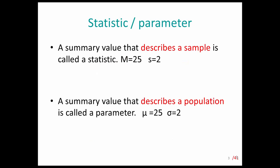Any number or score that we collect on a sample or that describes a sample is called a statistic. So if you have a group of participants and the average score is 25, that 25 is called a statistic. And any value or score that describes a population is called a parameter.